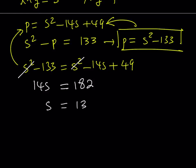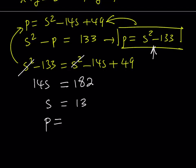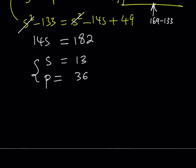And now, if we go ahead and plug in 13 here, we find that p is equal to 13 squared, which is 169 minus 133, and that is equal to 36. So our system of equations gives us another system of equations as a solution because s is the sum. So we get x plus y is equal to 13 and xy is equal to 36.